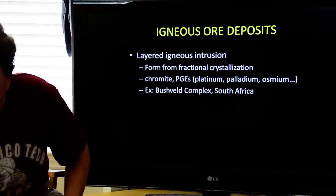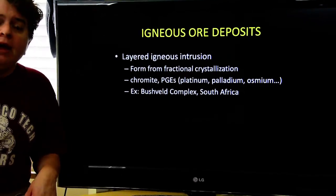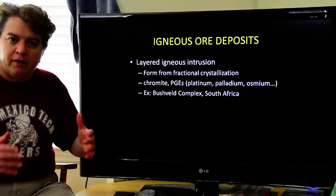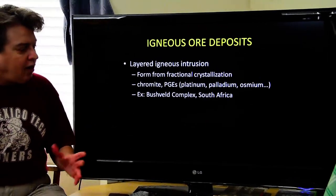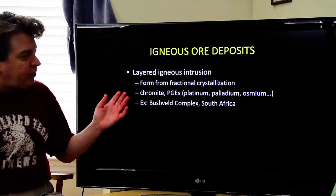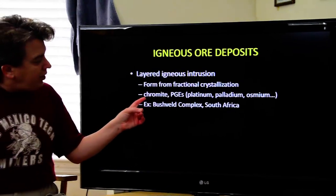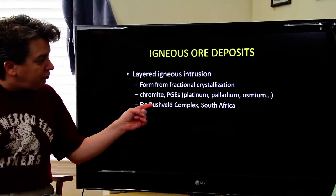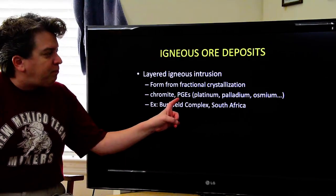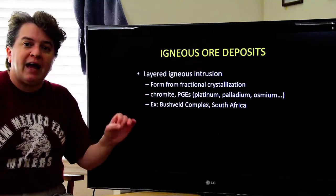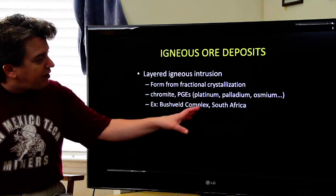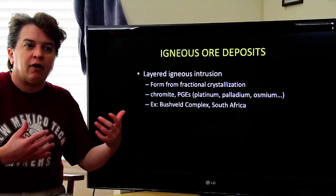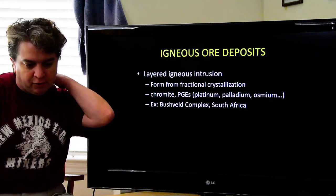Not all igneous intrusions cool that way — you need the perfect composition and conditions for it to happen. But if it does, we get some very important minerals. Chromite will form in these layered igneous intrusions, but we also get those PGEs — the platinum group elements. That's platinum, palladium, osmium, and other elements that act in similar ways.